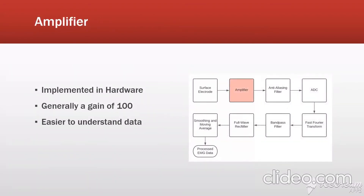Like all biopotentials, EMG signals have a very low amplitude, so we generally use an instrumentation amplifier, which gives off low noise at a gain of about 100 to give us a larger signal that is easier to analyze and understand. This is generally implemented in hardware.